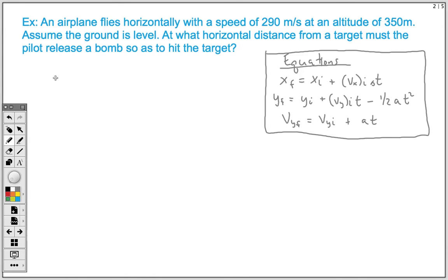It doesn't have to be perfect or anything, but here we have our airplane. He's traveling at a horizontal speed of 290 meters per second, and we know that he has an altitude, so our height is going to be 350 meters.